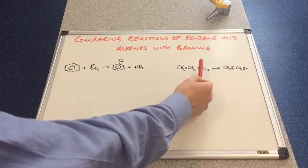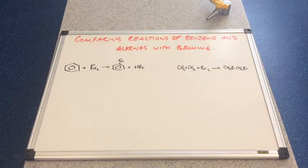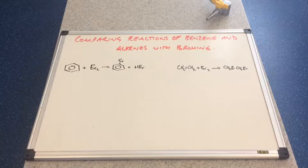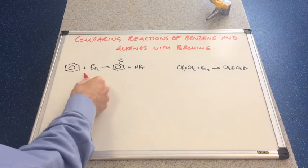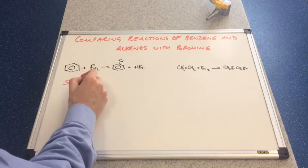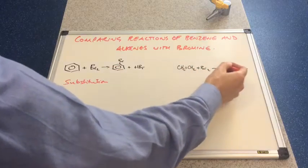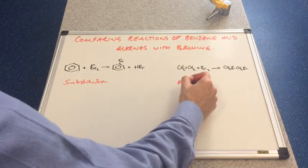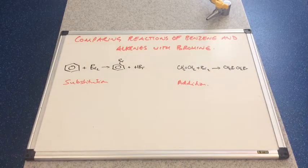So when ethene reacts with bromine we make 1,2-dibromoethane. Straight away you can see a difference in the type of reaction. This is a substitution reaction, whereas this reaction is an addition reaction. So straight away we've got a difference.